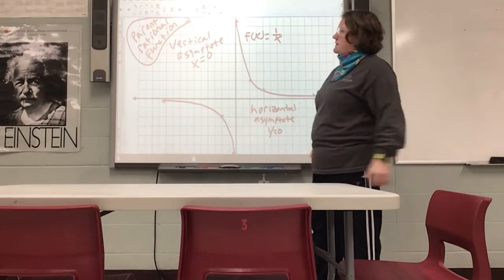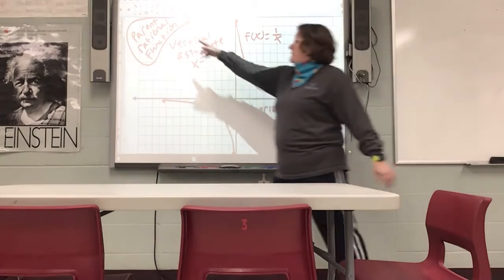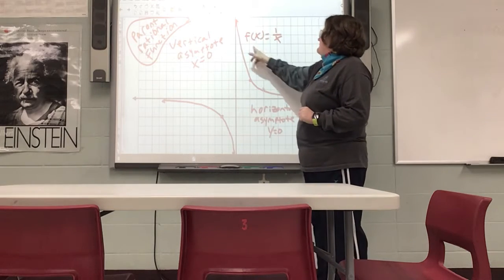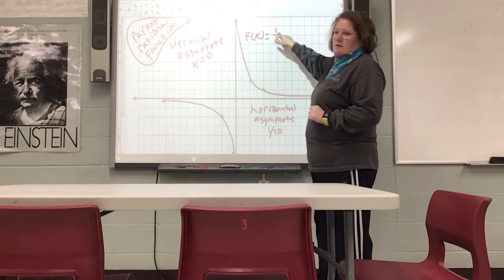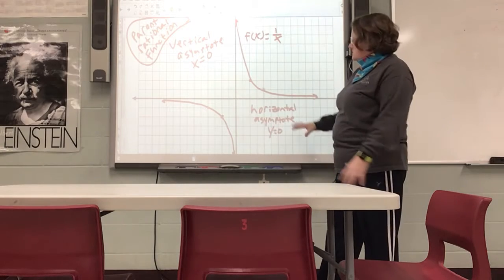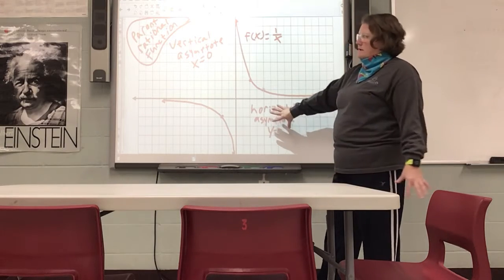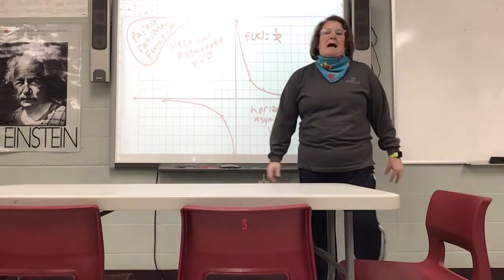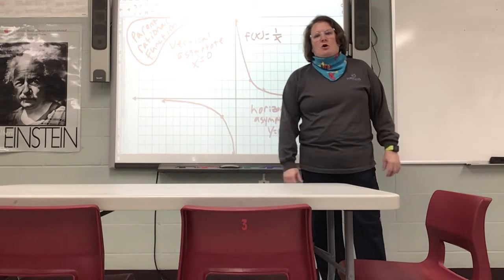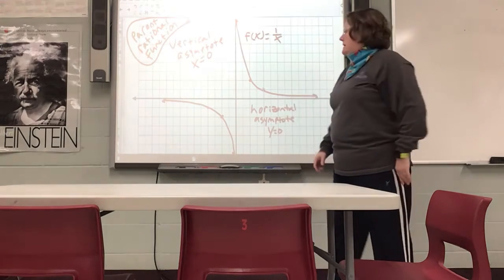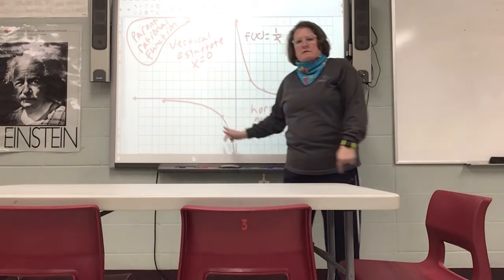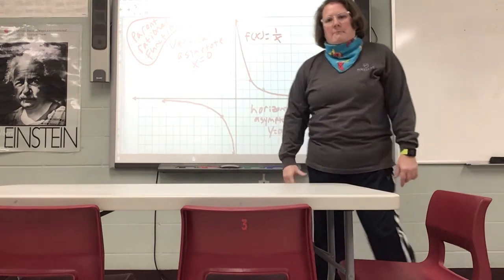This graph is of the parent function — we always start with the parent, the basic one. So this would be f(x) equals one over x. The graph of a rational function is called a hyperbola — h-y-p-e-r-b-o-l-a. A hyperbola consists of two branches, and those are the pretty curves you see here.